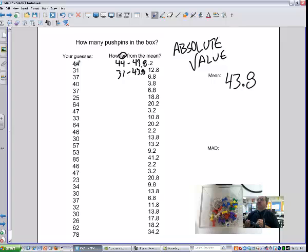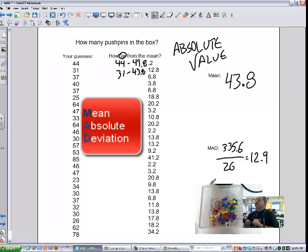So we figured out your guesses. From the guesses, we figured out what the average was, what the mean was. We took each one of your guesses and subtracted the mean from it to figure out how far each guess was from the mean. What we do to find the MAD is we find the mean of this list. When I did this list, I had it all up and I got a total of 335.6. I divided it by the 26 entries that we had, and it turned out that the mean absolute deviation, or the MAD, was 12.9.